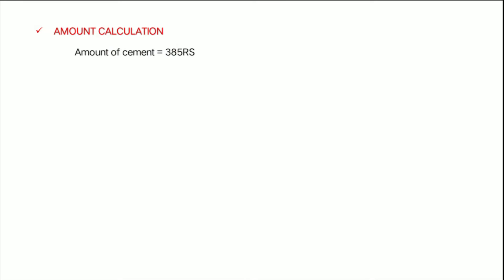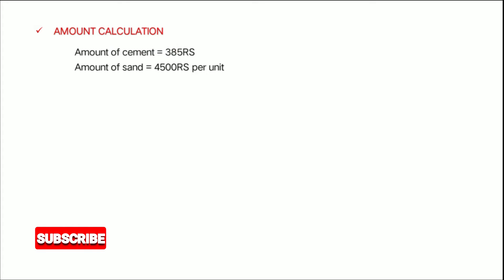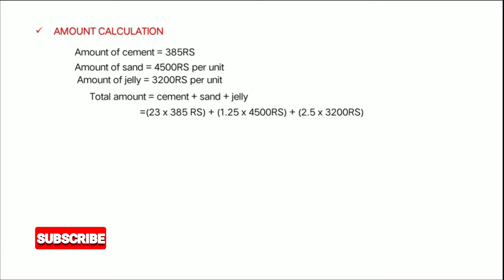Amount calculation: cement is 385 rupees per bag, sand is 4,000 rupees per unit, jelly is 3,200 rupees per unit. Total amount: cement plus sand plus jelly — 23 bags of cement at 385 rupees per bag, 1.25 units of sand at 4,000 rupees, 2.5 units of jelly at 3,200 rupees. Total cement cost: 8,855 rupees. Sand: 5,625 rupees. Jelly: 8,000 rupees. Total material amount: 22,480 rupees, rounded to 23,000 rupees.